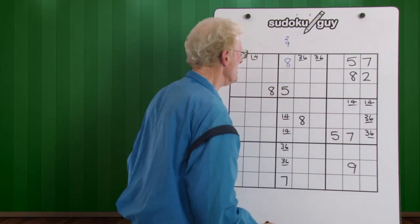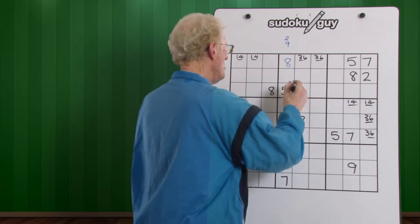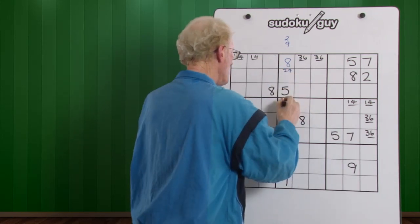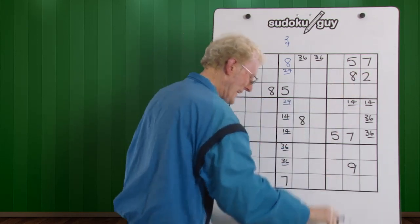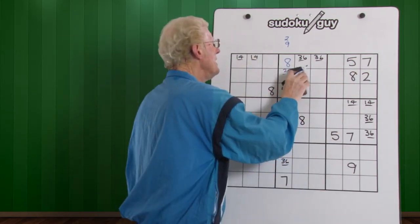We're back to nine, two nines. So we've got now a two, nine in here and a two, nine in here. But let's look across here. Look, there's a two there. So that changes this one to a nine.